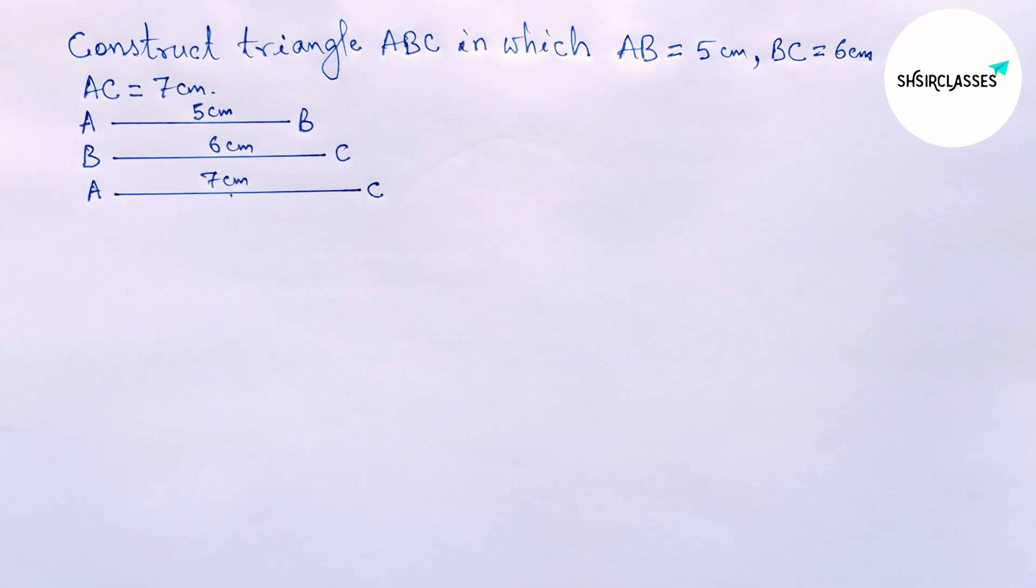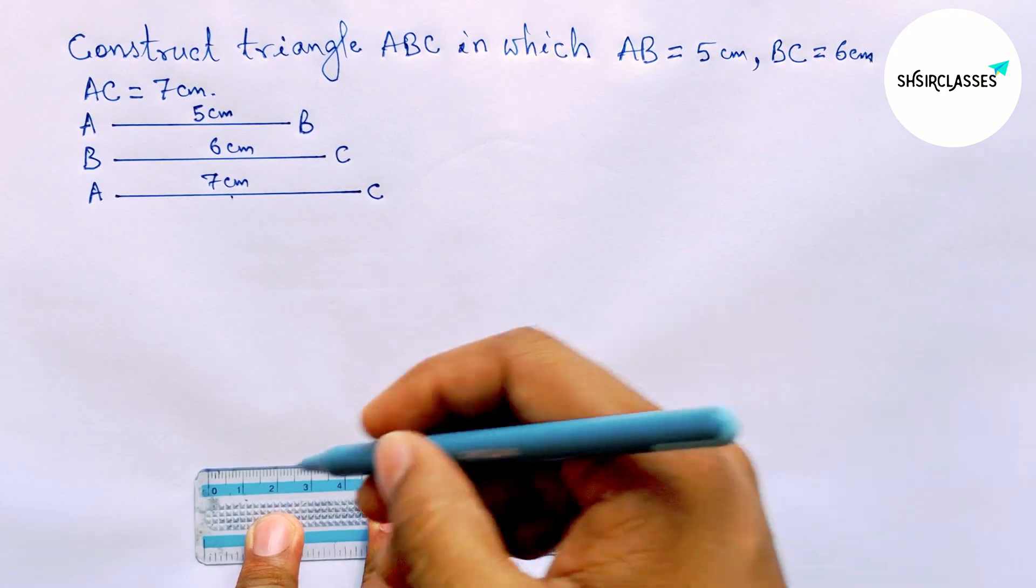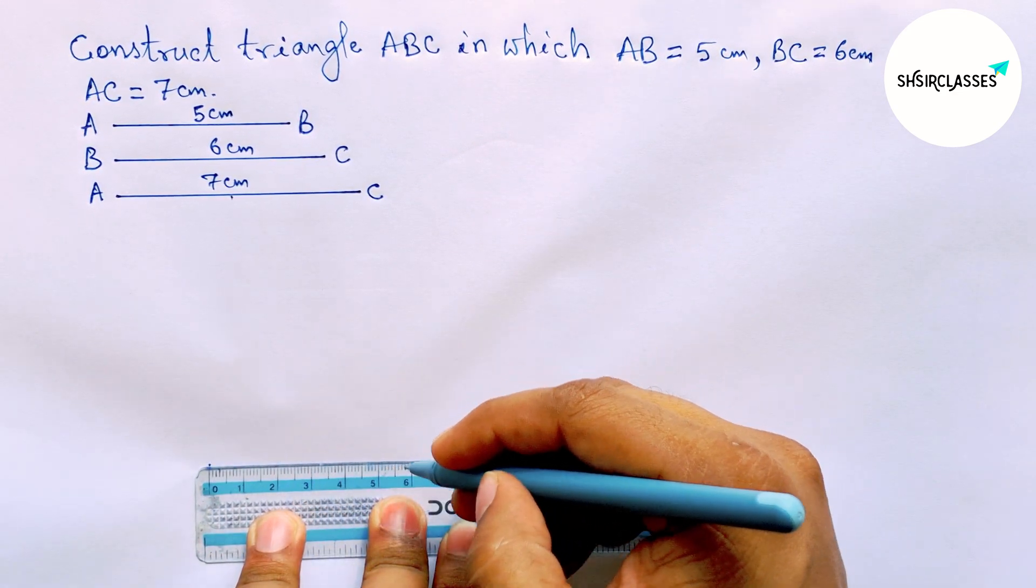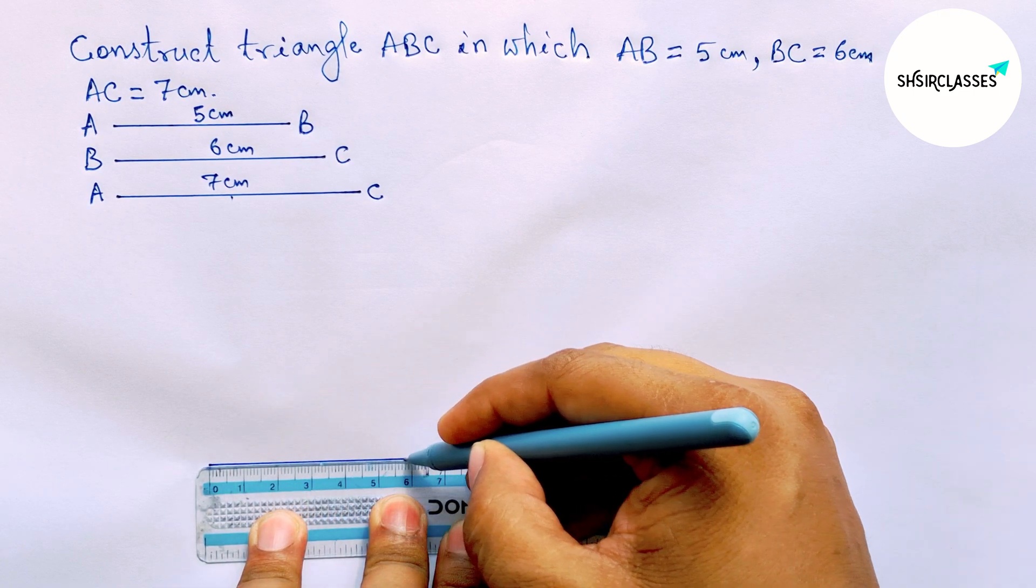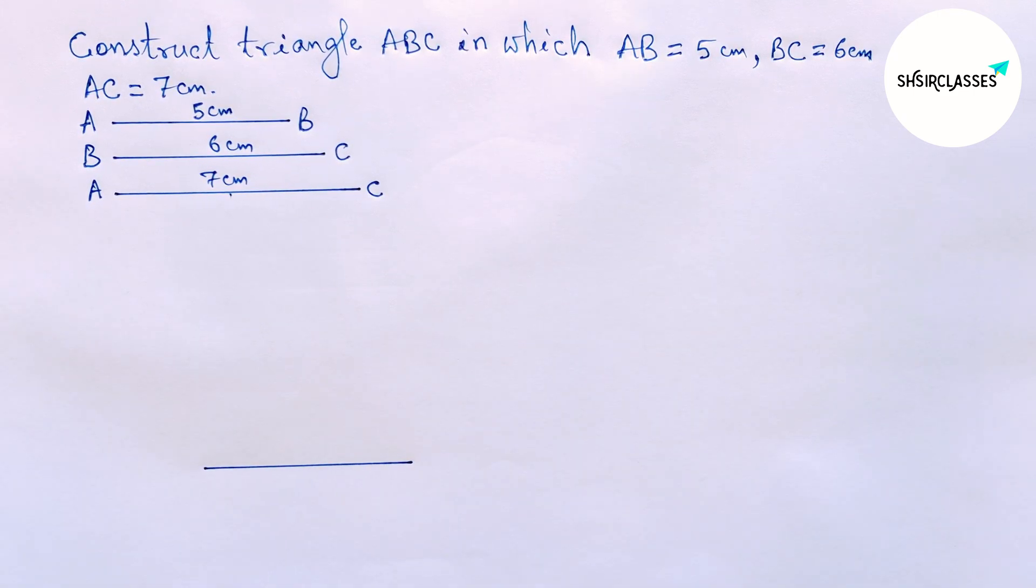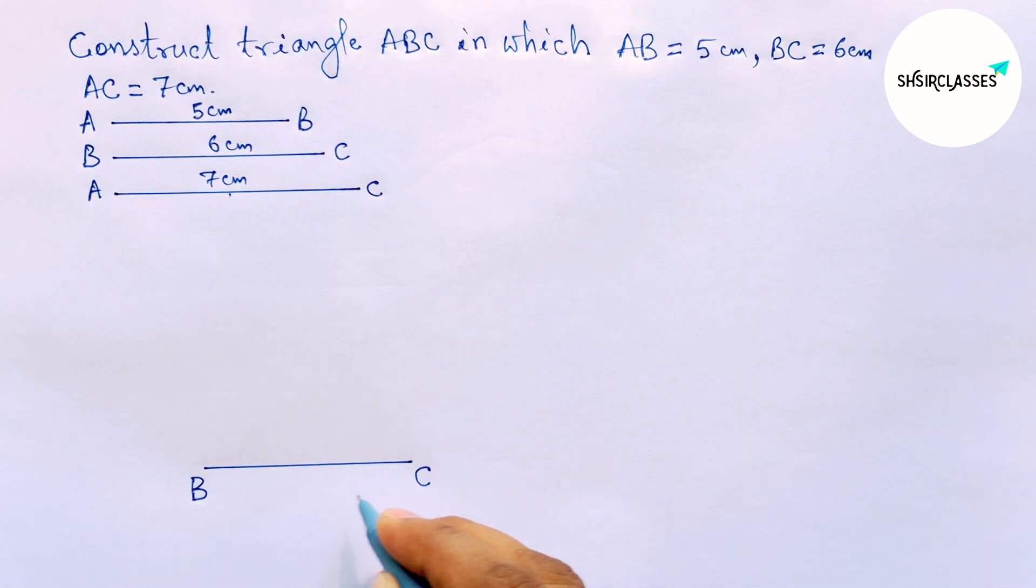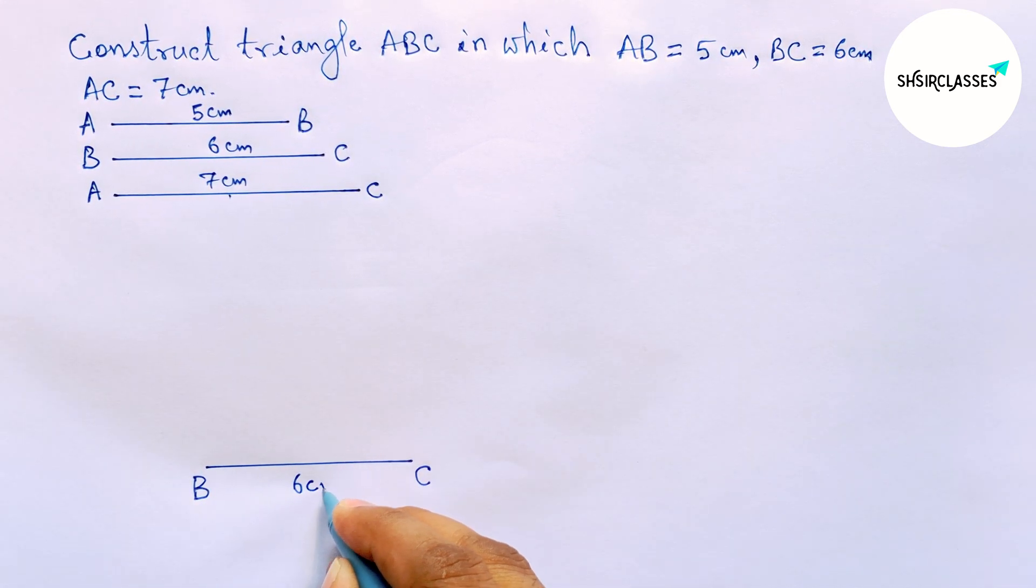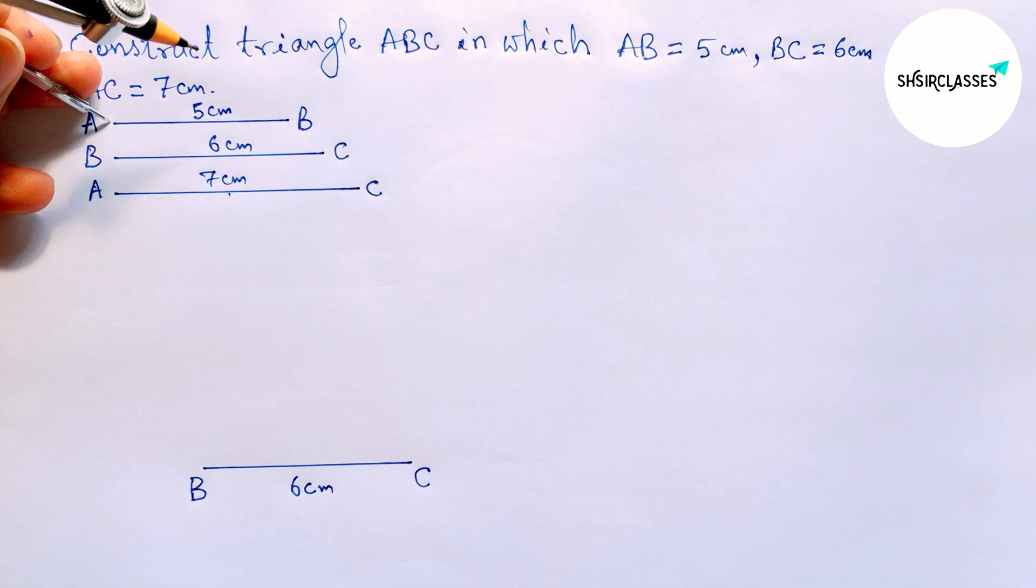Okay, now again drawing here a line segment of length 6 centimeters. So this is a 6 centimeter line segment. Labeling here B and here C, so BC equals 6 centimeters.